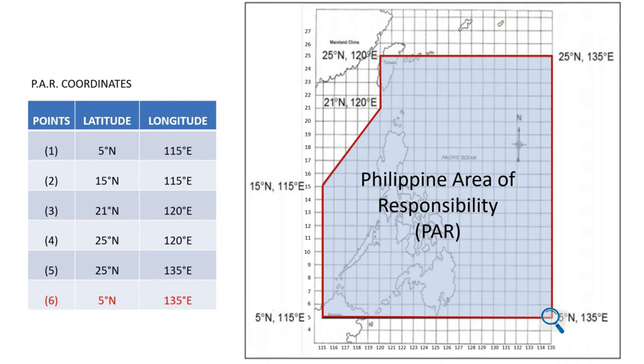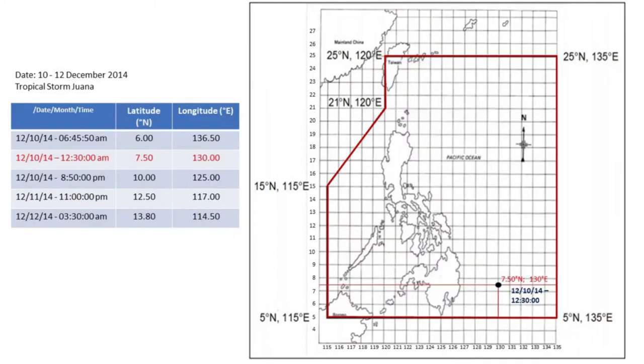The Philippine Area of Responsibility, however, does not define the boundary of Philippines' territory. Using a map and tracking data, the track of typhoons can be traced. For example...